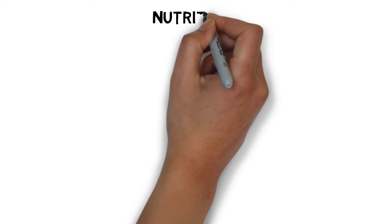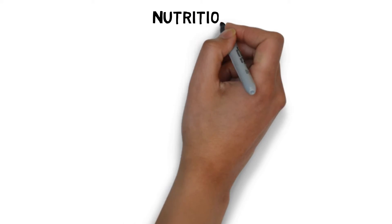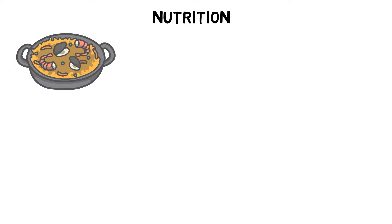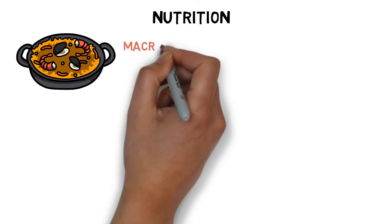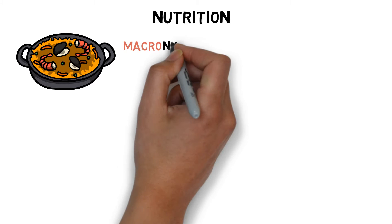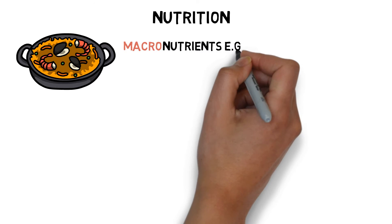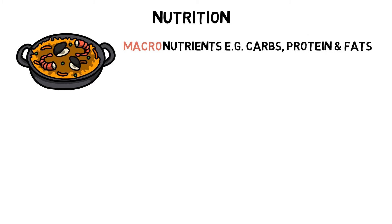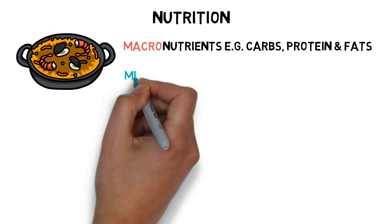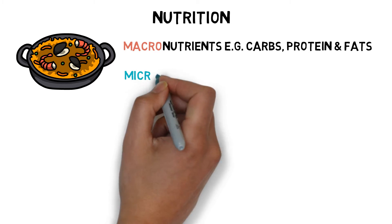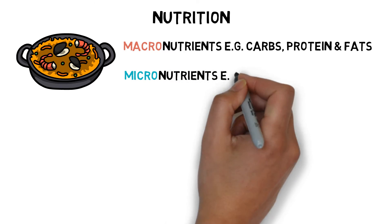Nutrition is a vital tool in the pursuit of maximising performance and body composition, and must be tailored specifically for the individual. Nutrients can be divided into two main groups: macronutrients, which include carbohydrates, protein, and fat; and micronutrients, which include vitamins and minerals.